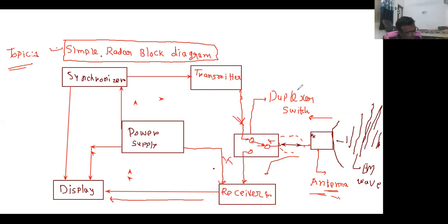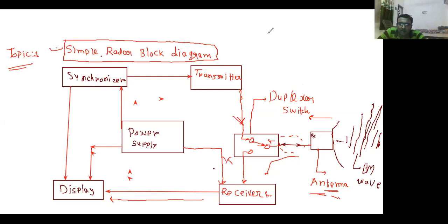The display shows whatever data is received. It can be formed as different waveforms — the vertical axis represents the strength of the electric field, magnetic field, or electromagnetic wave, and the horizontal axis indicates time delay. This is the basic block diagram of radar explained in this lecture, which is chapter one for degree engineering and chapter five for diploma students. In the next lecture, we will discuss the different types of radar.